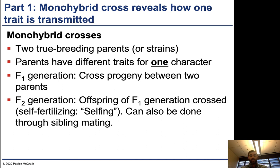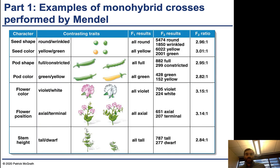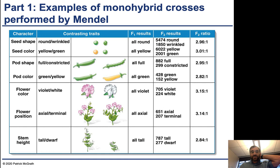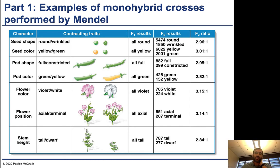In other problem sets, you might see genetic analysis in Drosophila fruit flies — in that case, the F1 generation would be crossed by sibling mating, so siblings are mated together to produce the F2 generation. Mendel did this for all seven different characters, each with two different traits. Each of these crosses started with a pure true-breeding population of one of the two traits.